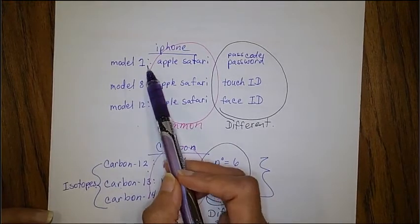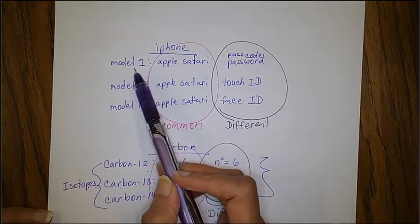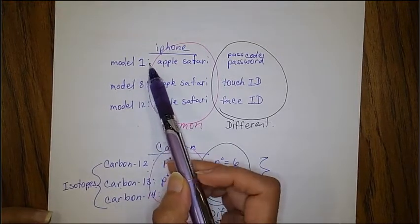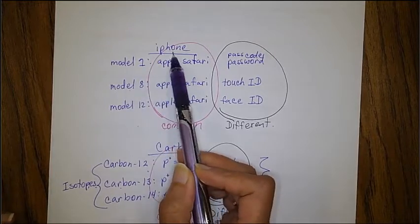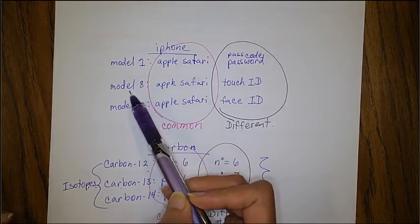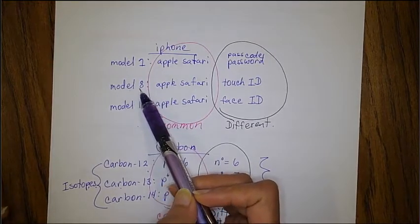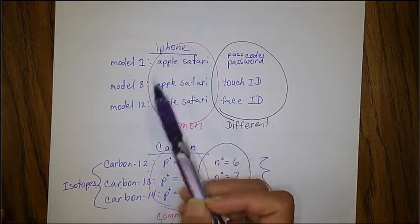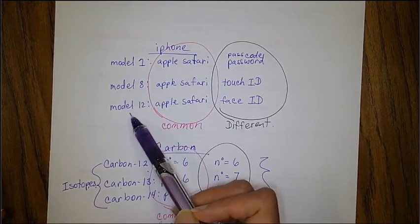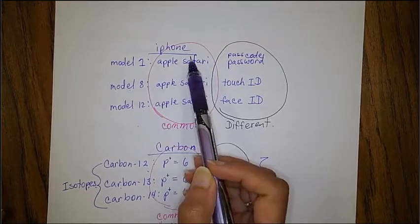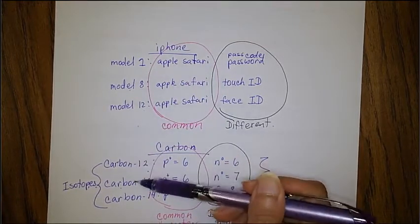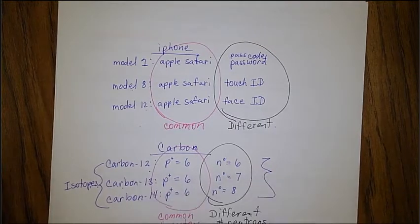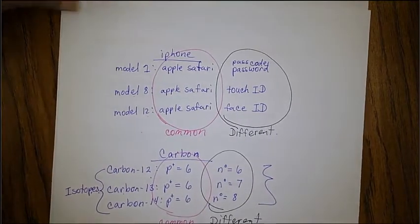That is why instead of saying 'models,' we use the word isotope. Carbon-12, carbon-13, and carbon-14 are all isotopes of carbon — just like we say model 1, model 8, and model 12 of the iPhone. So isotope-12, isotope-13, isotope-14. That's what an isotope is.